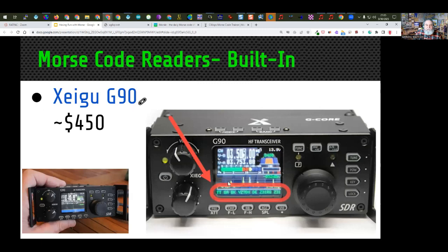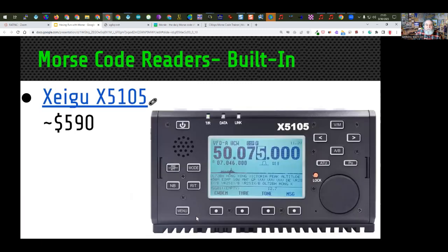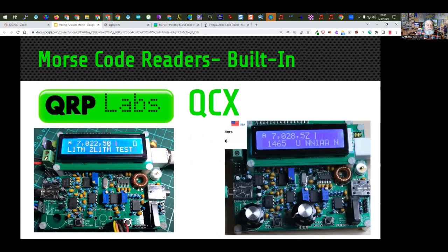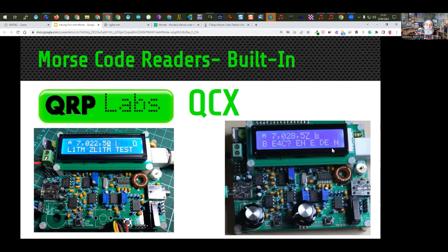The Xiegu G90 has a rudimentary decoding system, as does the Xiegu X5105, and I think the 61 does also. The QRP Labs has one of the best decoders, and it's also one of the cheapest — the kit was $49, now $55 for the newer version. It's a single-band CW transceiver. You pick the band, build the kit, or buy it pre-assembled for a little bit more money, and you can see it decoding right on the screen.